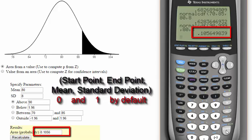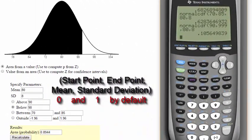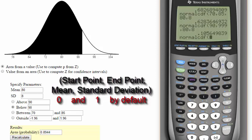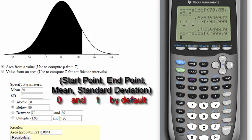The same process can be used to find the area below a point. Go back to normal CDF. This time we want to start with a very low point like negative 999 and go all the way up to 90 on the curve, then put in our mean and standard deviation.